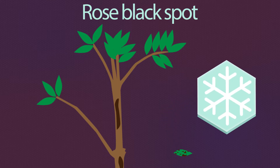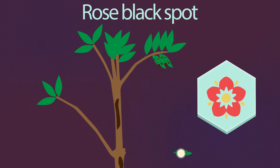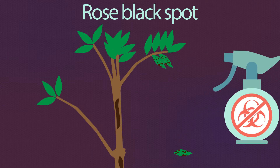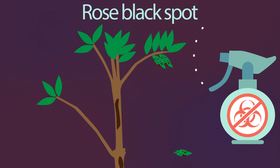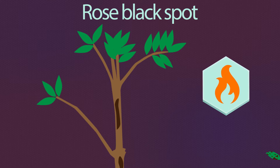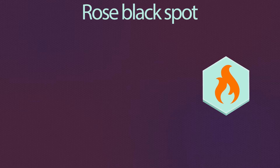The fungi spends the winter in a dormant state on the leaves that have fallen on the ground, and also in young stems and buds. In spring, the fungi reproduces sexually, producing spores which can be carried in the wind to affect other plants. Rose black spot can be treated by spraying the leaves with fungicides — special chemicals that kill fungi. It can be prevented by collecting and destroying leaves that have fallen off an infected plant.